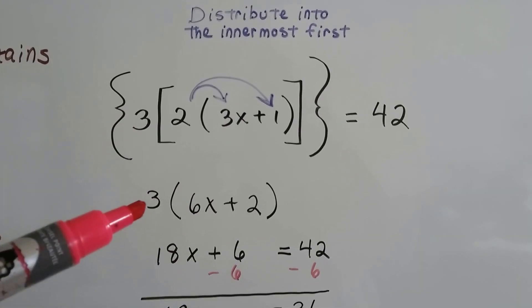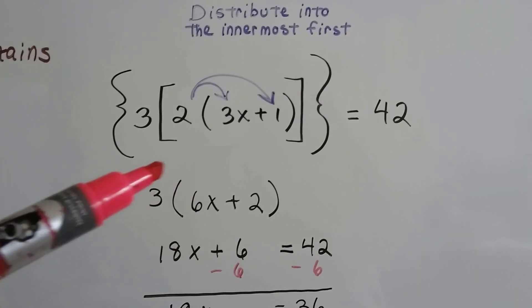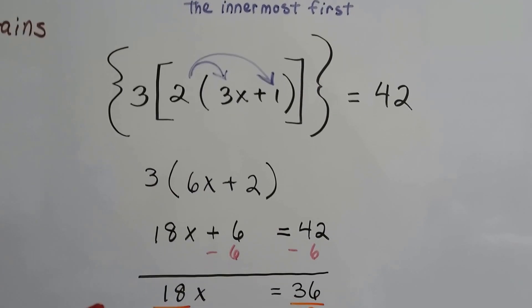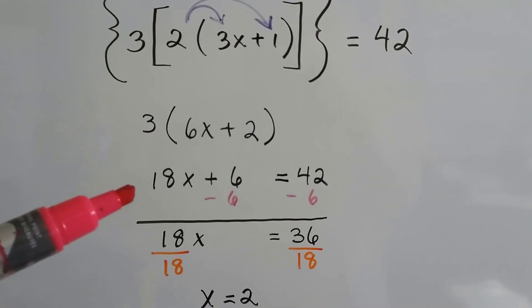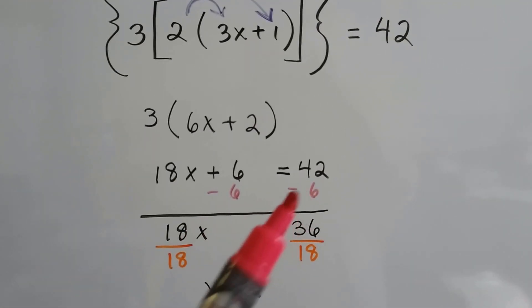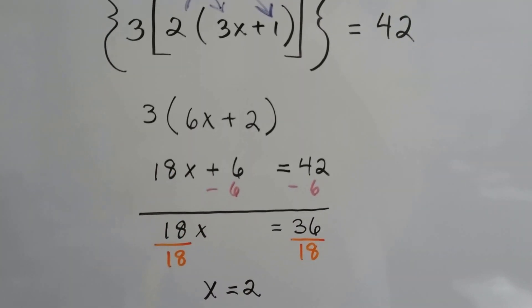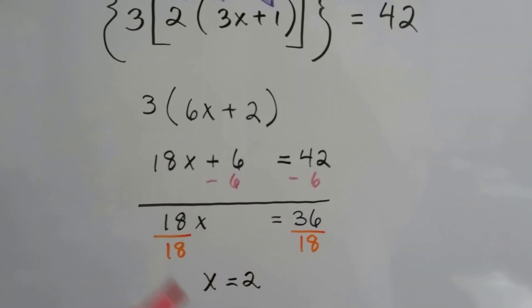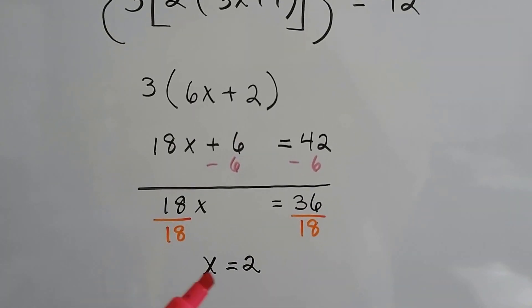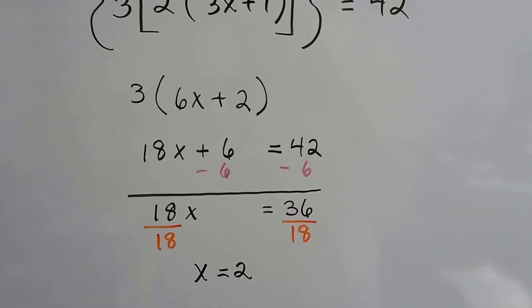Then we distribute this 3 to the 6x and to the plus 2. We get 18x plus 6. Now we can subtract 6 from both sides to create a zero pair here, start isolating this x. We get 18x equals 36. We can divide each side by the 18, and x equals 2.